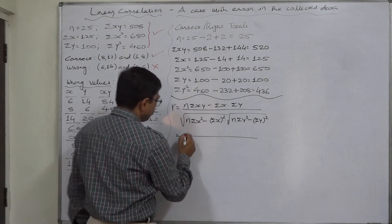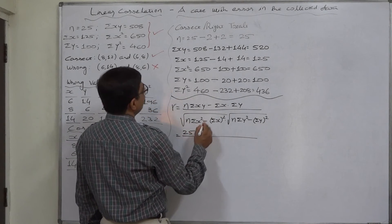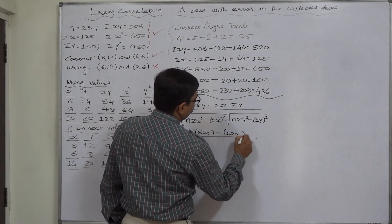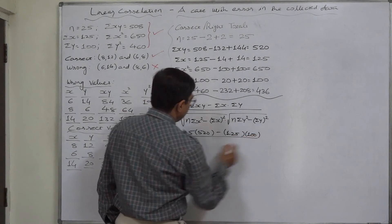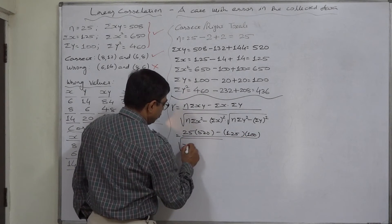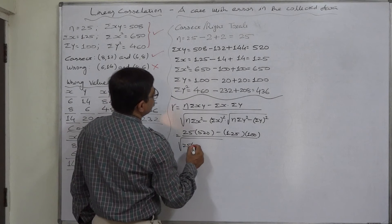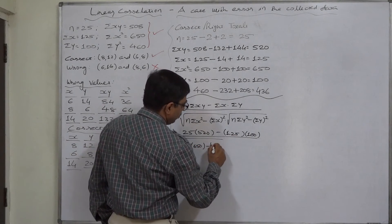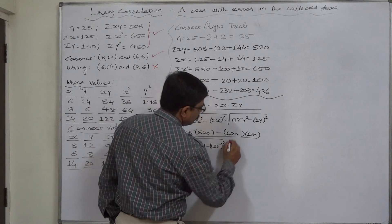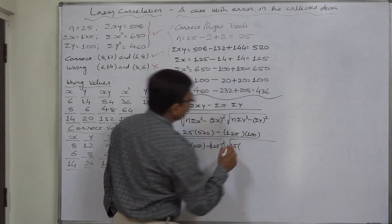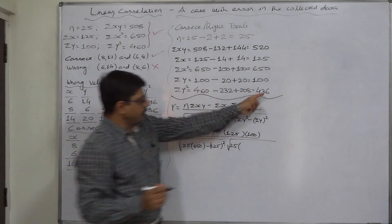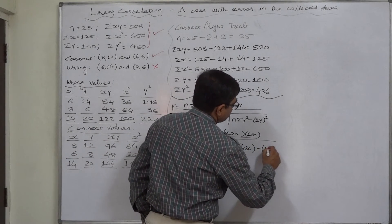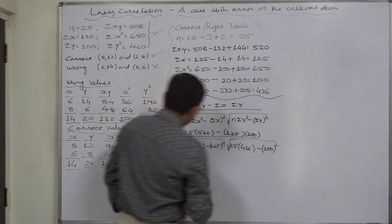Let us substitute the correct values. n is 25, Σxy=520 minus Σx=125 and Σy=100 upon under root. And 25 times Σx²=650 minus Σx=125 the whole square into under root. And 25 times Σy² now, that is rectified value 436 minus Σy=100 the whole square.